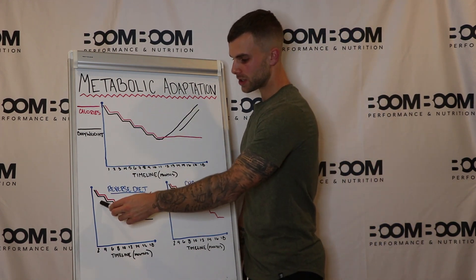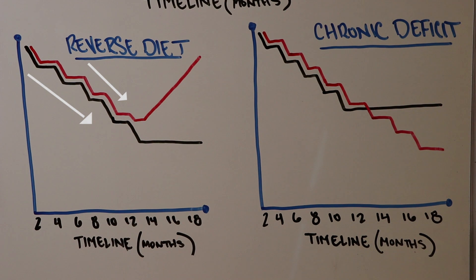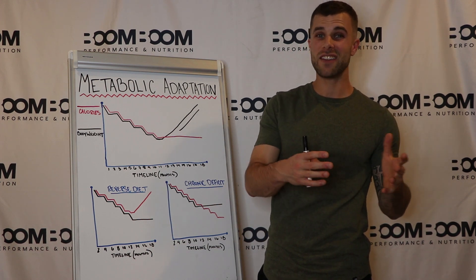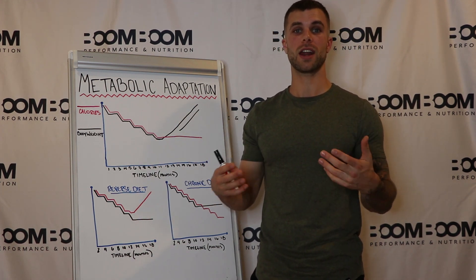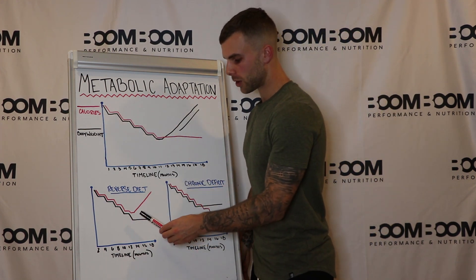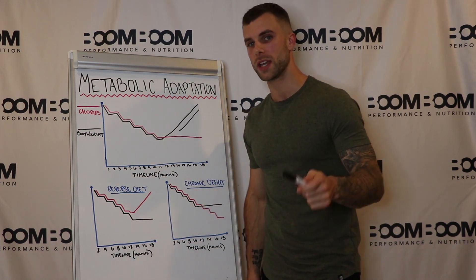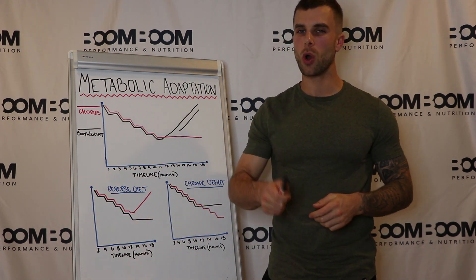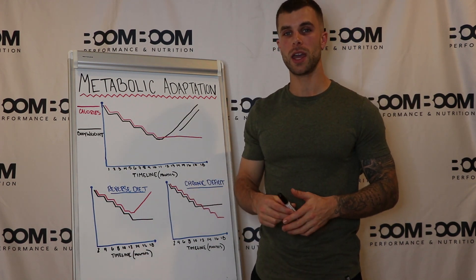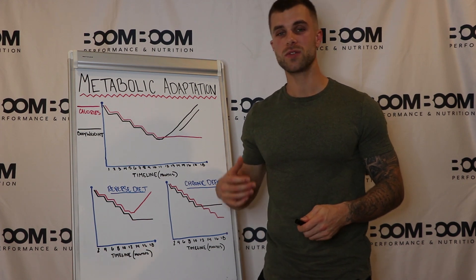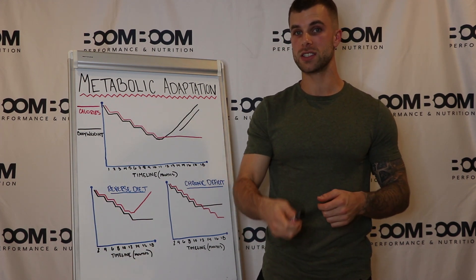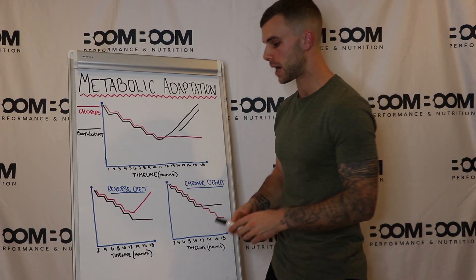The third graph is the reverse diet — the best scenario possible. We bring calories down and body weight down, but before we reach the point where body weight really plateaus, we start slowly bringing calories up. This is over months and months. Typically on a reverse diet you're bringing calories up 5 to 25 percent per one to two weeks — a big variance depending on how adaptive somebody's metabolism is. The goal is to get close to our goal weight without pushing the body so hard that we wreck it.